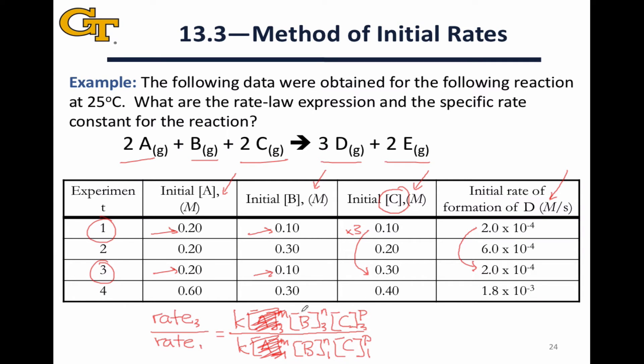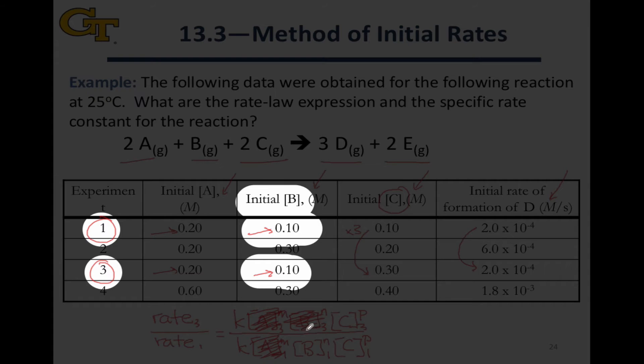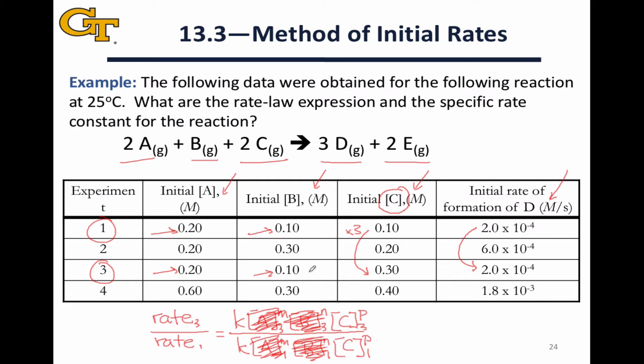Likewise for reactant B, the two concentrations are equal in trials 3 and 1, and so those are going to divide out. Now, what we can do with the concentrations of C is group them together and kick the exponent. If I look at the concentration of C in trial 3, that's 0.30, 0.10 moles per liter in trial 1, and so we end up with 3 to the P.